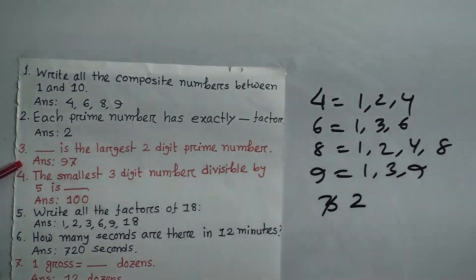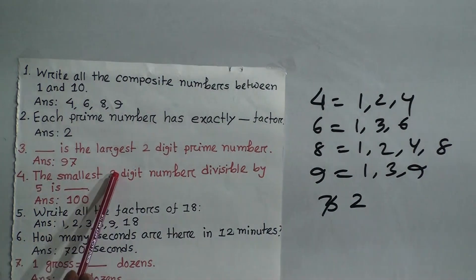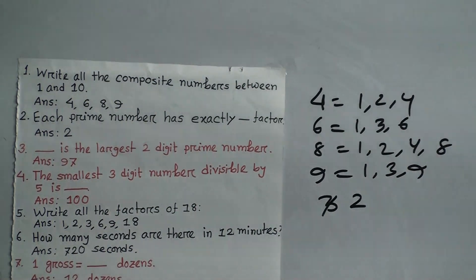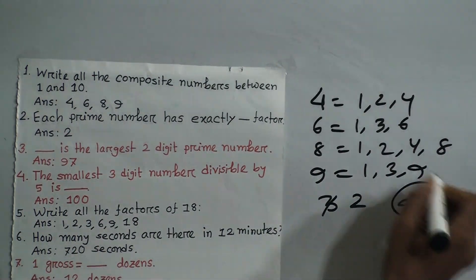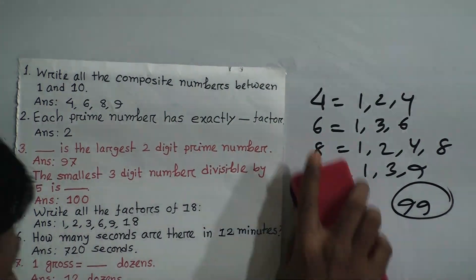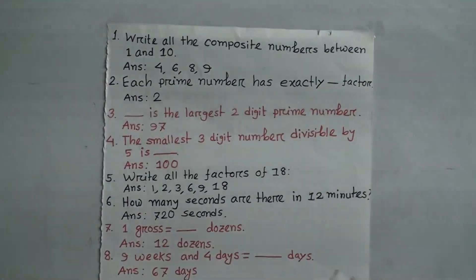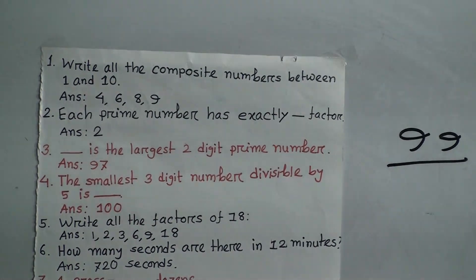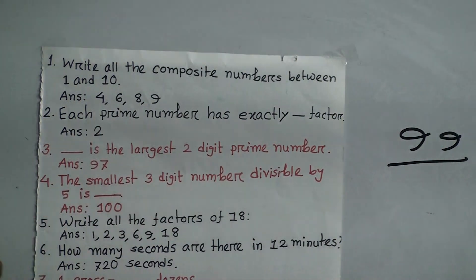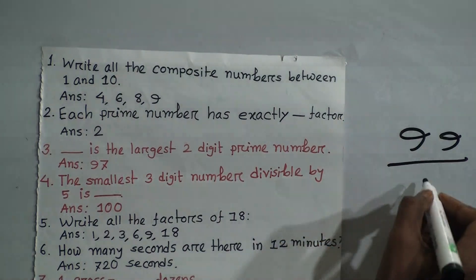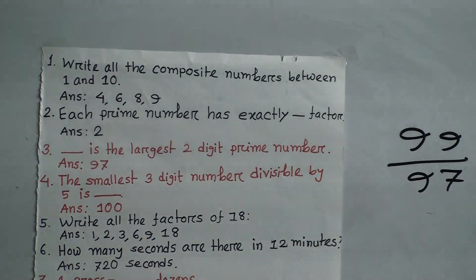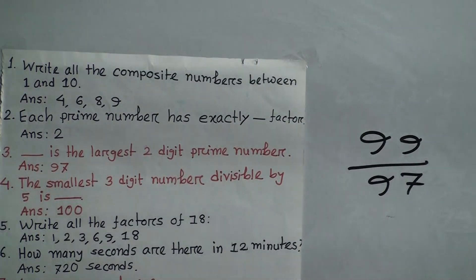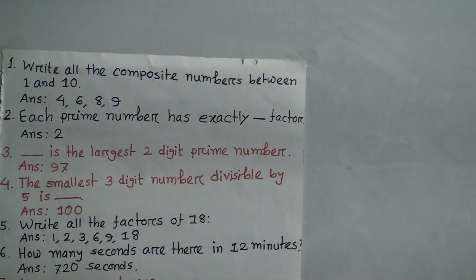Question 3: What is the largest two-digit prime number? We know the largest two-digit number is 99, but 99 is a composite number. So the answer is 97. 97 is the largest two-digit prime number.